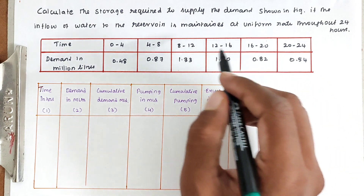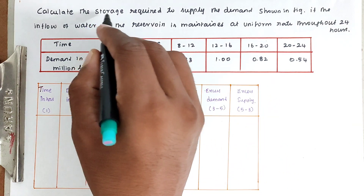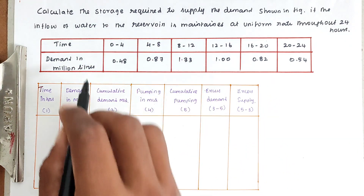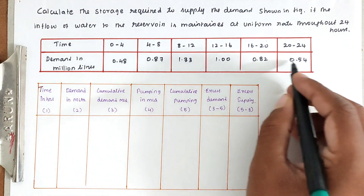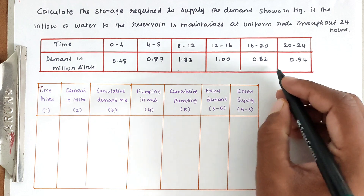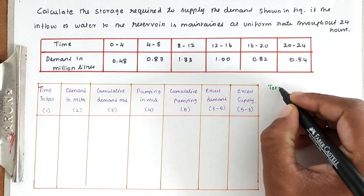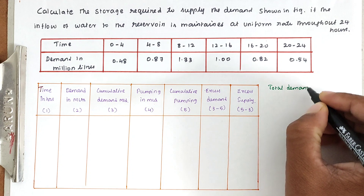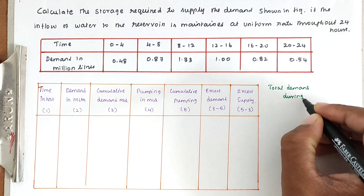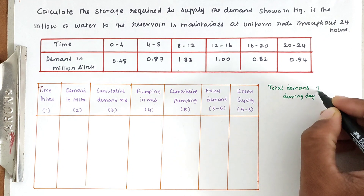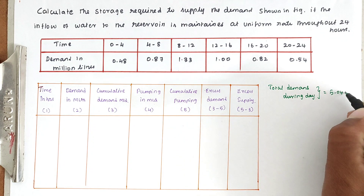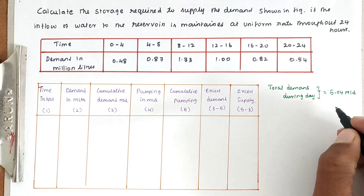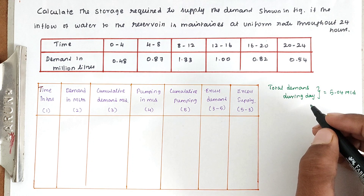Now for the cumulative demand — how much total water is to be supplied to the city — we add all those values. The total demand during the day comes out to 5.04 million liters per day. So we have to supply 5.04 million liters per day.